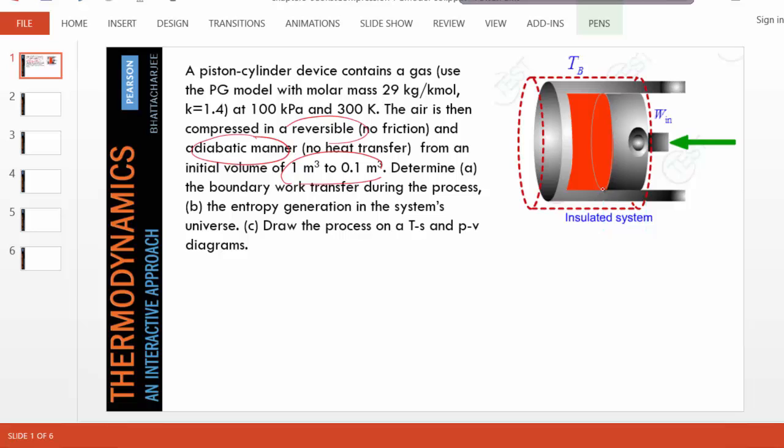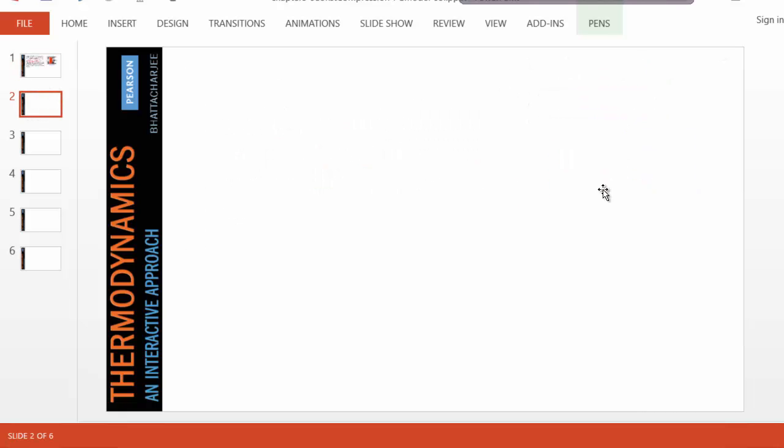So let's first set up the problem, which is what we know about state one and state two. And if we list them, state one, what is given to us are pressure, 100 kPa, temperature.